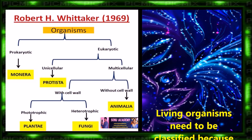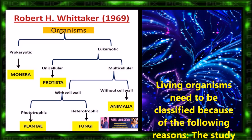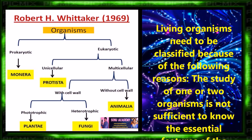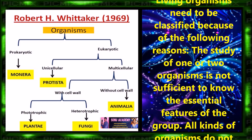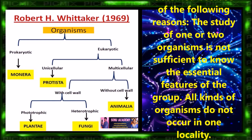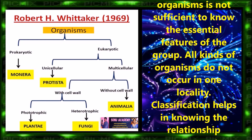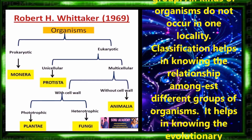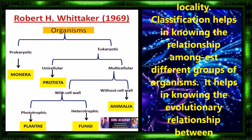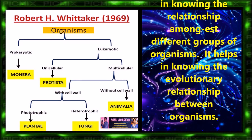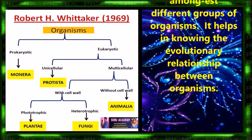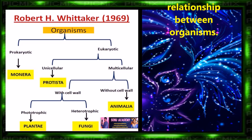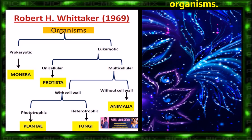Now let us see why living organisms need to be classified. First, the study of one or two organisms is not sufficient to know the essential features of the group. Second, all kinds of organisms do not occur in one locality. Third, classification helps in knowing the relationship amongst different groups of organisms. Fourth, it helps in knowing the evolutionary relationship between organisms.